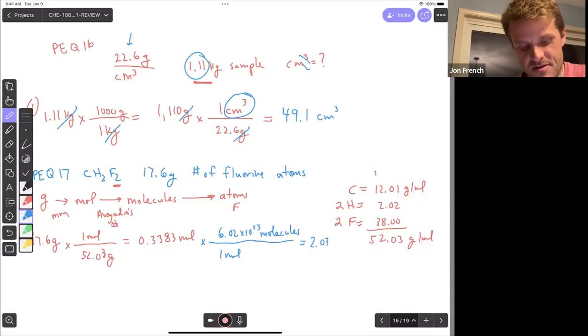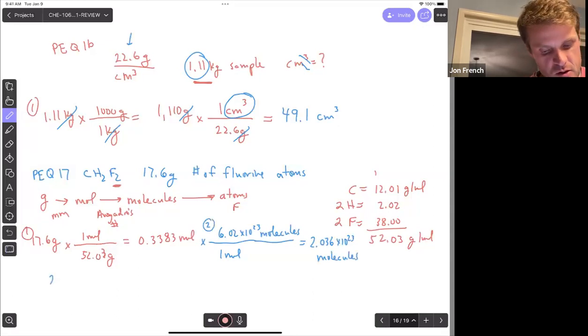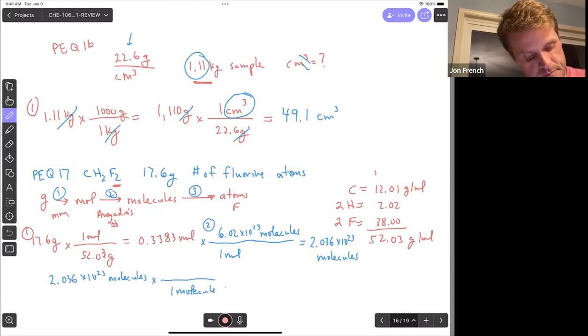I get 2.036 times 10 to the 23 molecules. So that was step one. That was step two. Now that we've got 2.036 times 10 to the 23 molecules. This is the new step for us. Step one we did. Step two was Avogadro. Step three, we're going to say for every one molecule, that equation, that formula tells us there are two hydrogens. So the last step, two, or sorry, there's two fluorines, two fluorine atoms. There are two hydrogens as well, but we're not looking for the hydrogen. So we multiply by two.